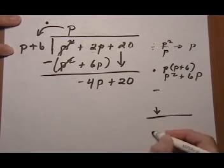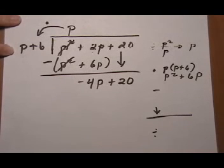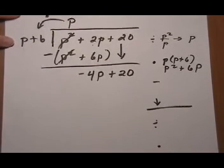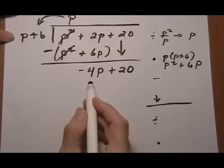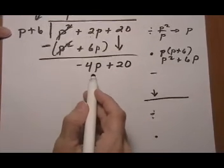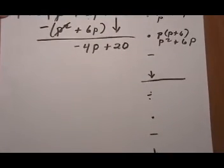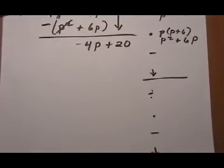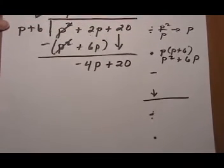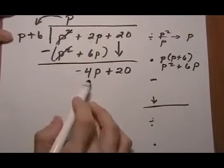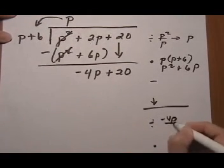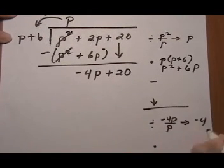Now we're starting over again. Divide, multiply, subtract, bring down. Minus 4p divided by p. First term by first term again. I can't see that. Okay. First term by first term, minus 4p over p will leave us with minus 4.